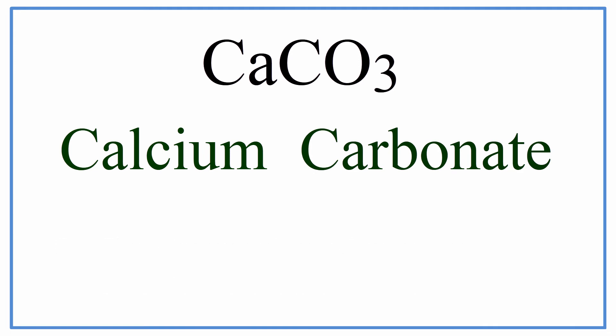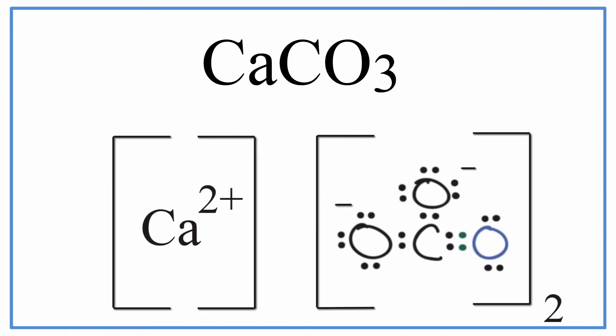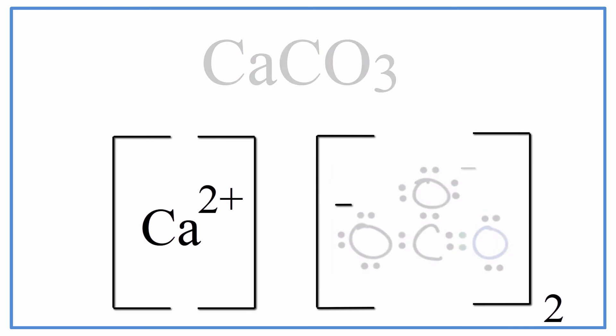So now we have the name calcium carbonate for CaCO3. We can also represent this as a Lewis structure, and that might look something like this. Note that CaCO3 is normally found as a crystal, and these are just representations of a single formula unit.